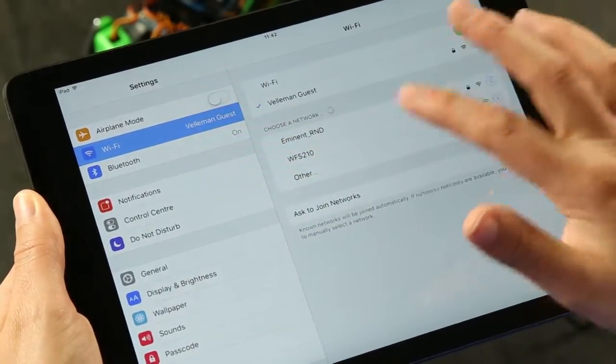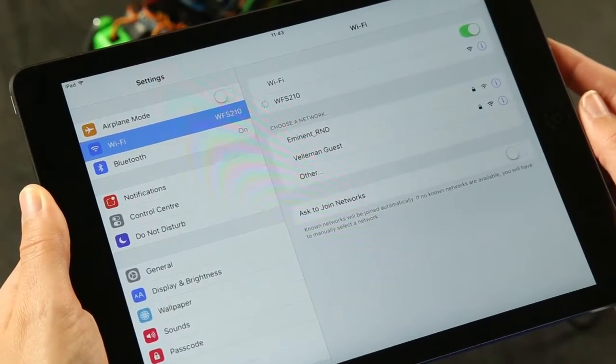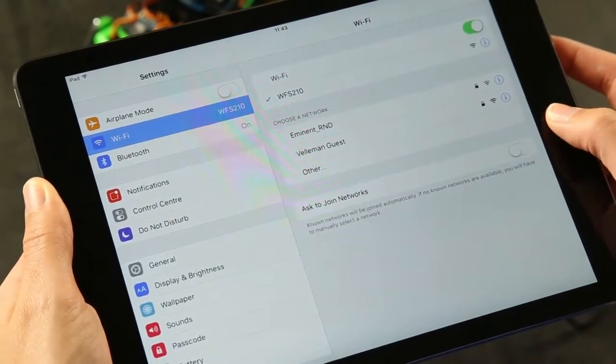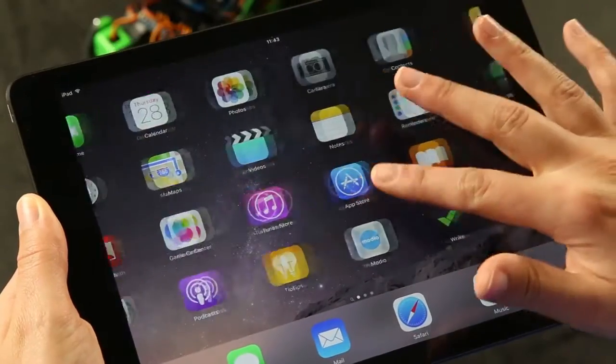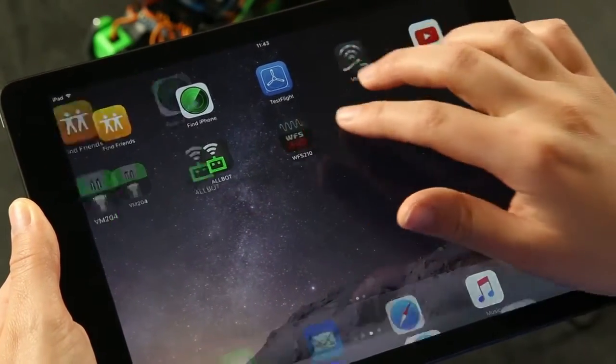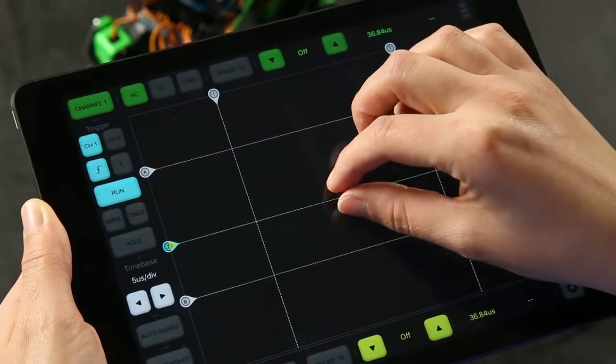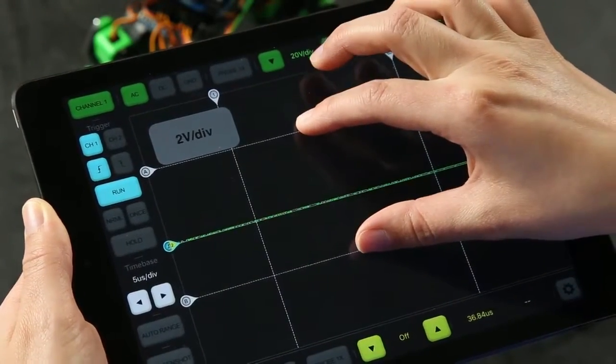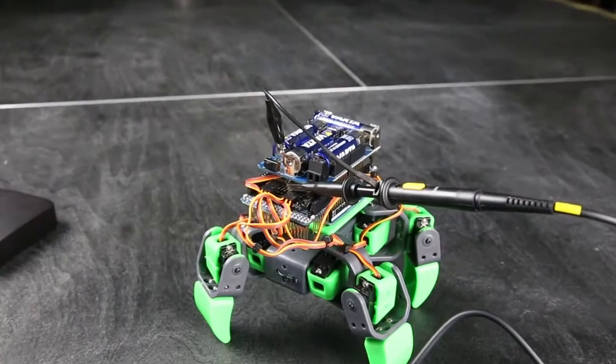All you need to do now is install the app which you can find on the Google Play Store or the Apple App Store. Search for the term WFS210. And then we're ready. Yes, then you're ready. Get your probes out and measure whatever you want and it will show up on your screen.